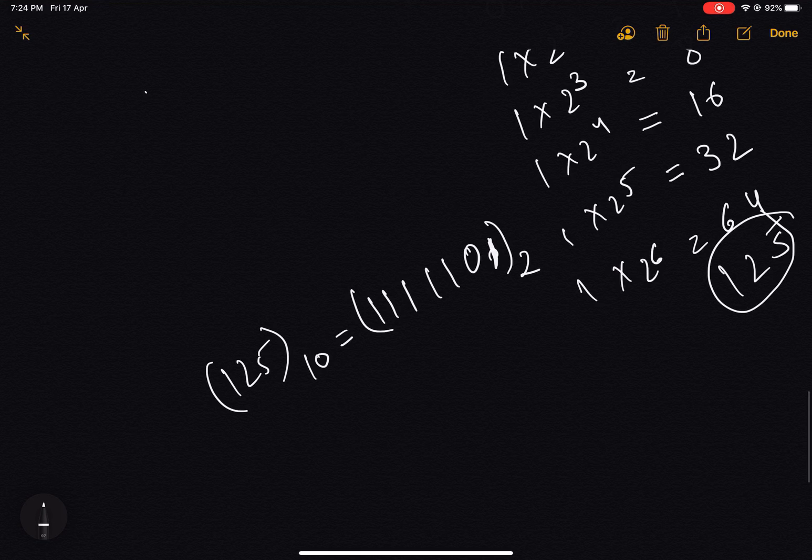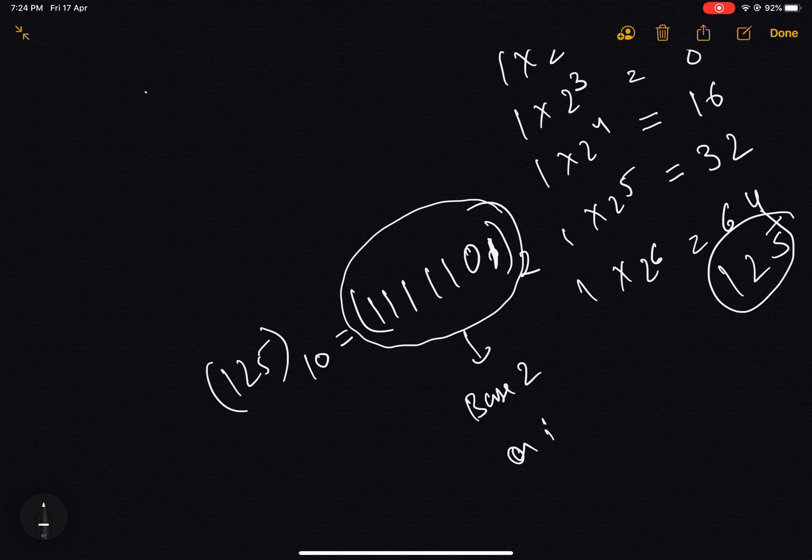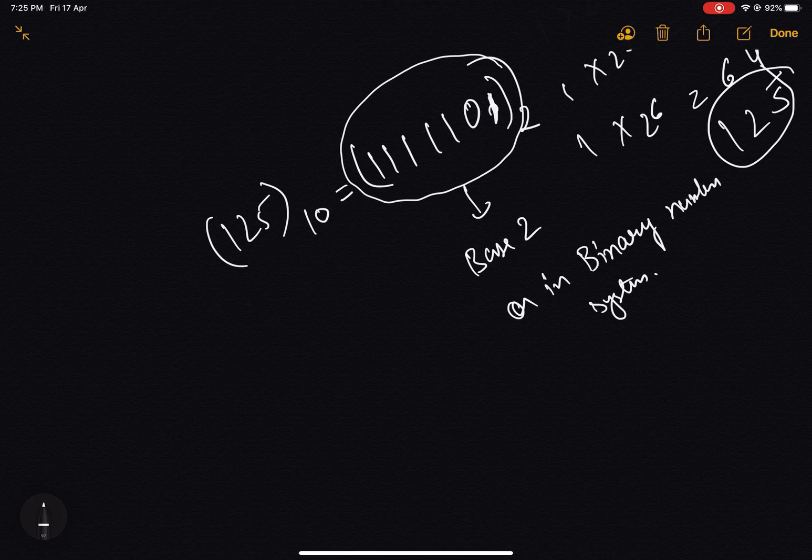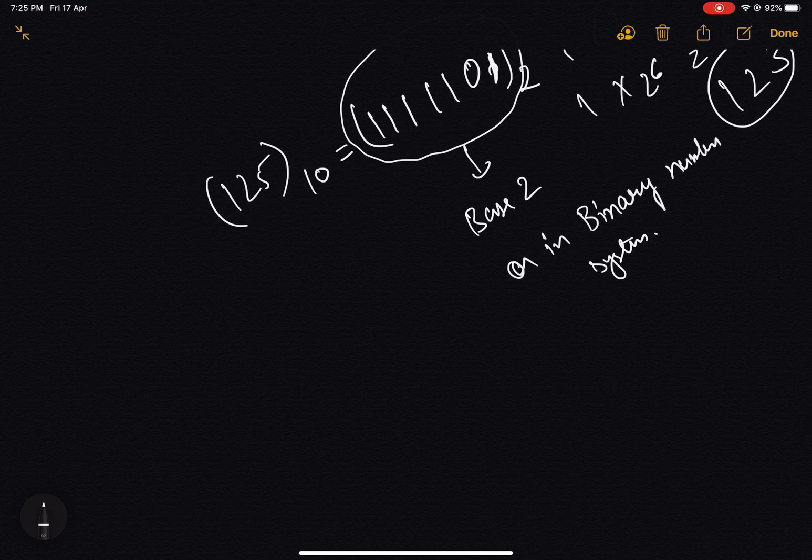So now we have learned that if we have been given any number in base 2 or in binary number system, how we can convert it into decimal number system. This is all about the basics of binary number system. That's it from this lecture. Thanks.